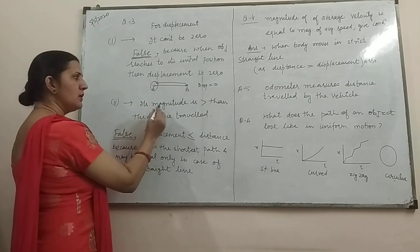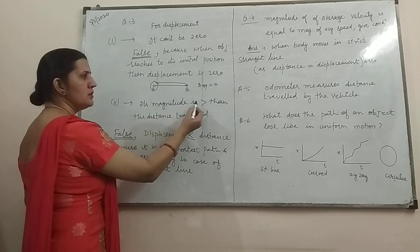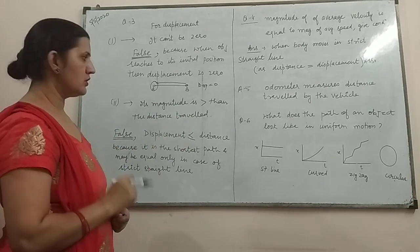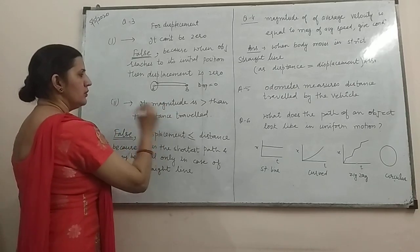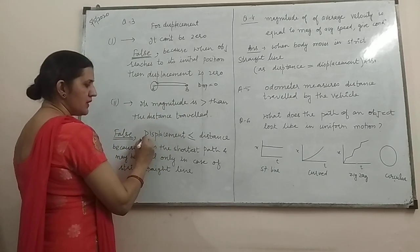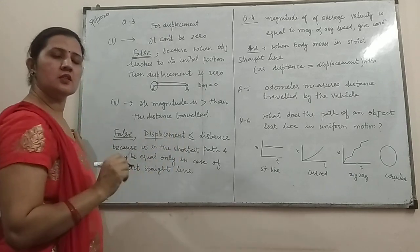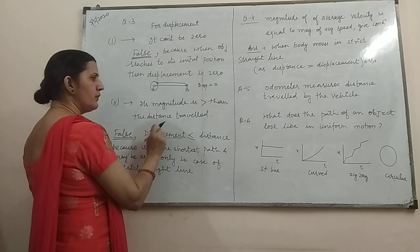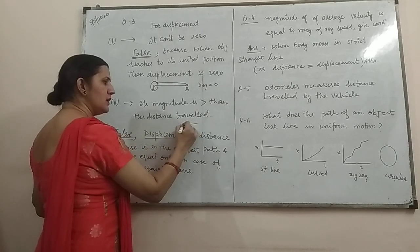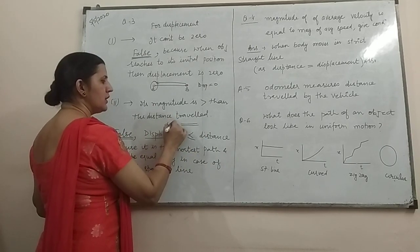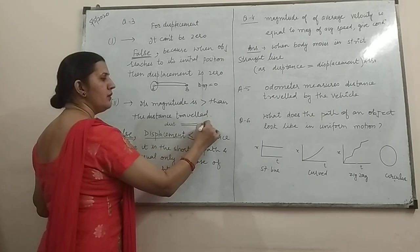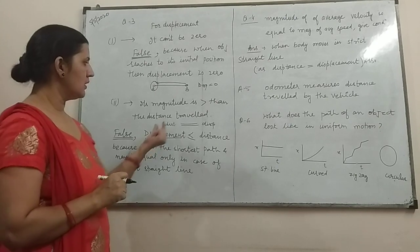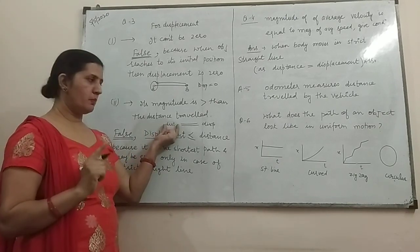Second statement is, its magnitude is greater than the magnitude of distance. Is it right or wrong? You know that displacement is the shortest path travelled by the object. And the object is moving, its distance and displacement both can be equal only when it is moving in a single straight line. Otherwise, it is the shortest path.